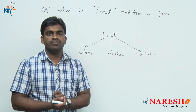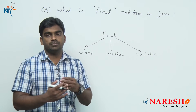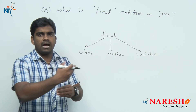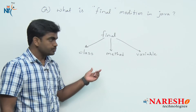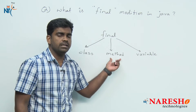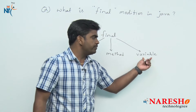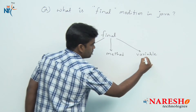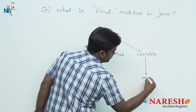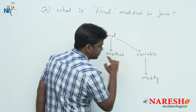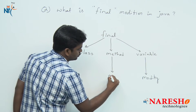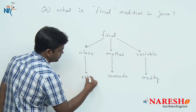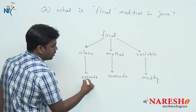What final does is it restricts updation permissions. Generally, if a class is there, you can update it by extending it. A method's functionality can be updated by overriding it. And a variable's value can be updated by modifying it. So variables you can modify, methods you can override, and classes you can extend — all of these are updations.